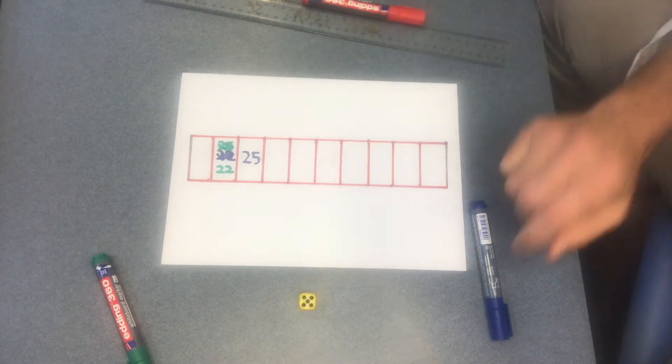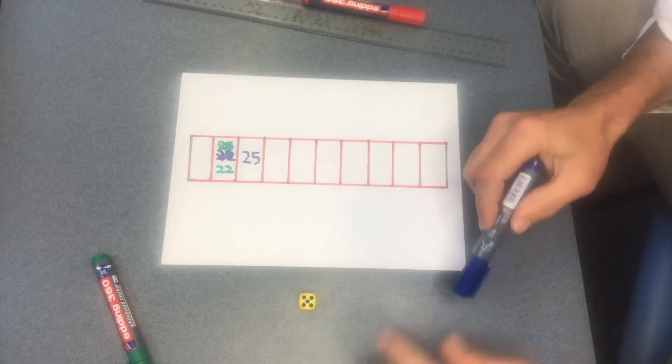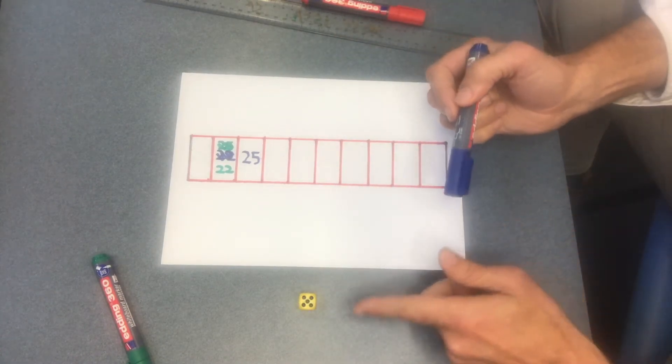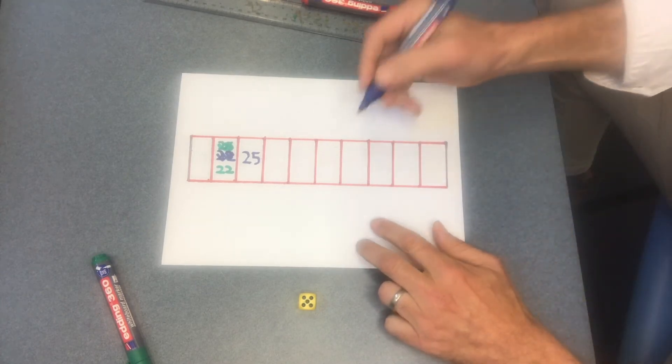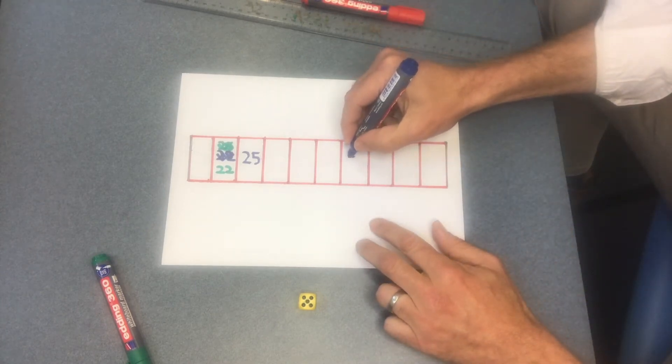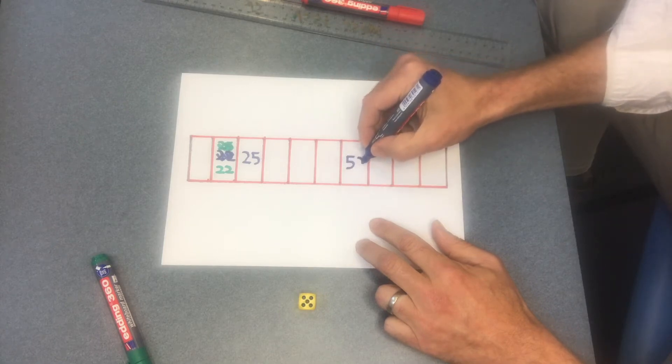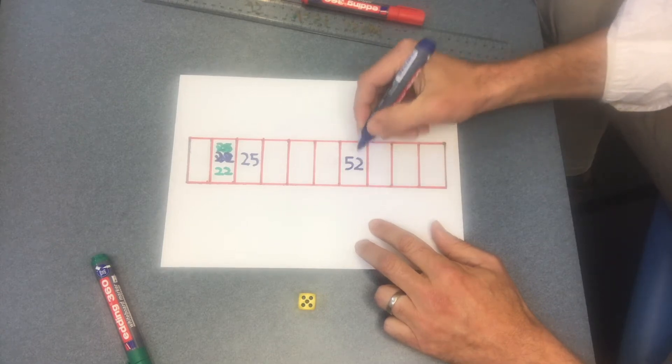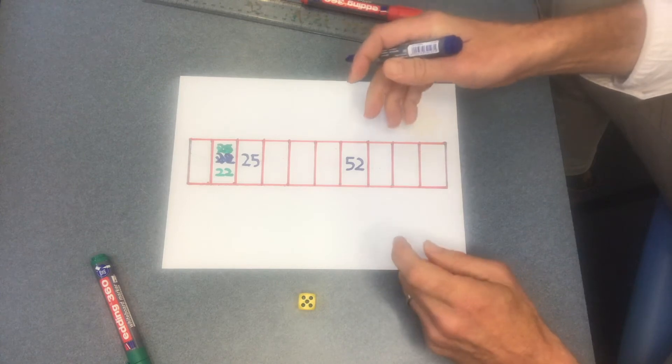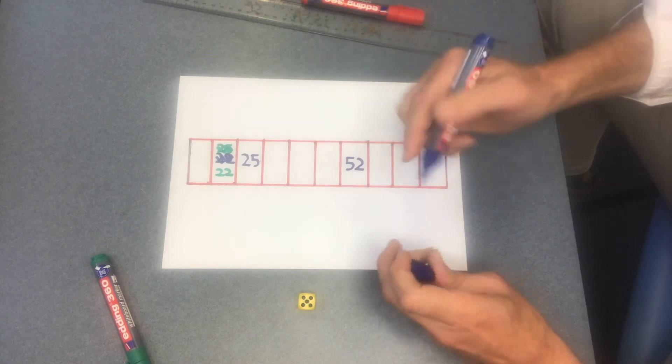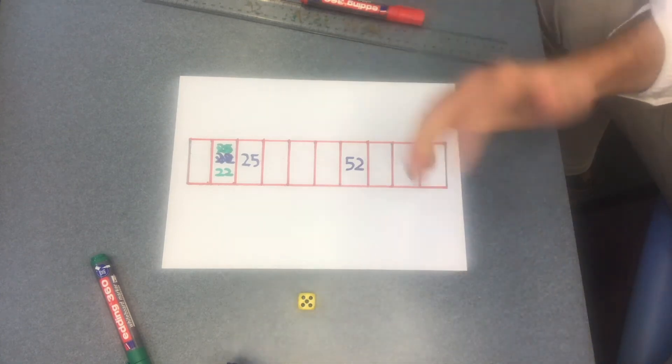And then it becomes my turn again so I've got 25, so I won't do that, 52 I'll do, so I'm going to put 52 here. And you get to choose where you put them but they need to be in the right order, okay? You can't put a higher amount before a low amount and vice versa.